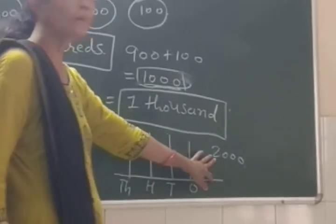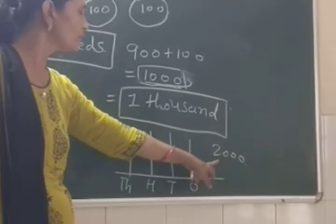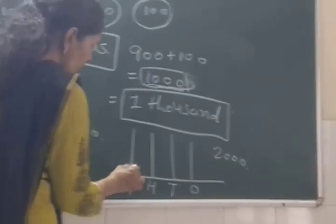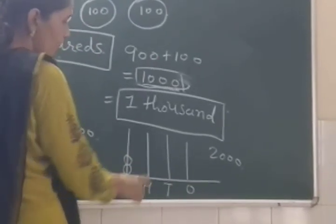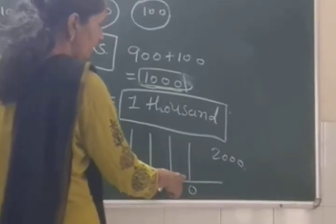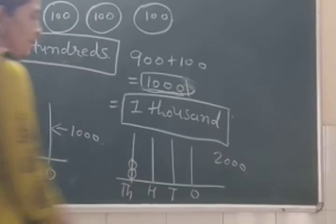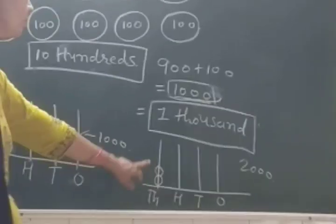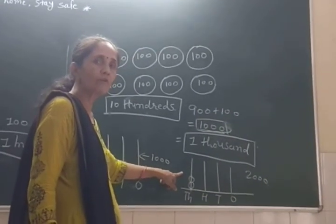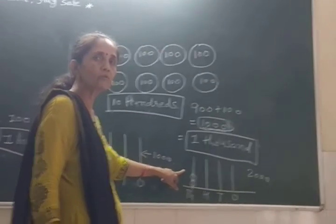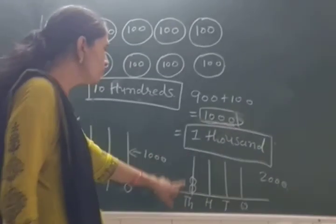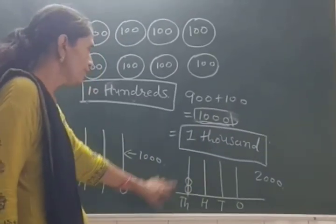Two thousand. This is two thousand. This is three thousand, four thousand, five thousand, six thousand, seven thousand, eight thousand, and nine thousand.